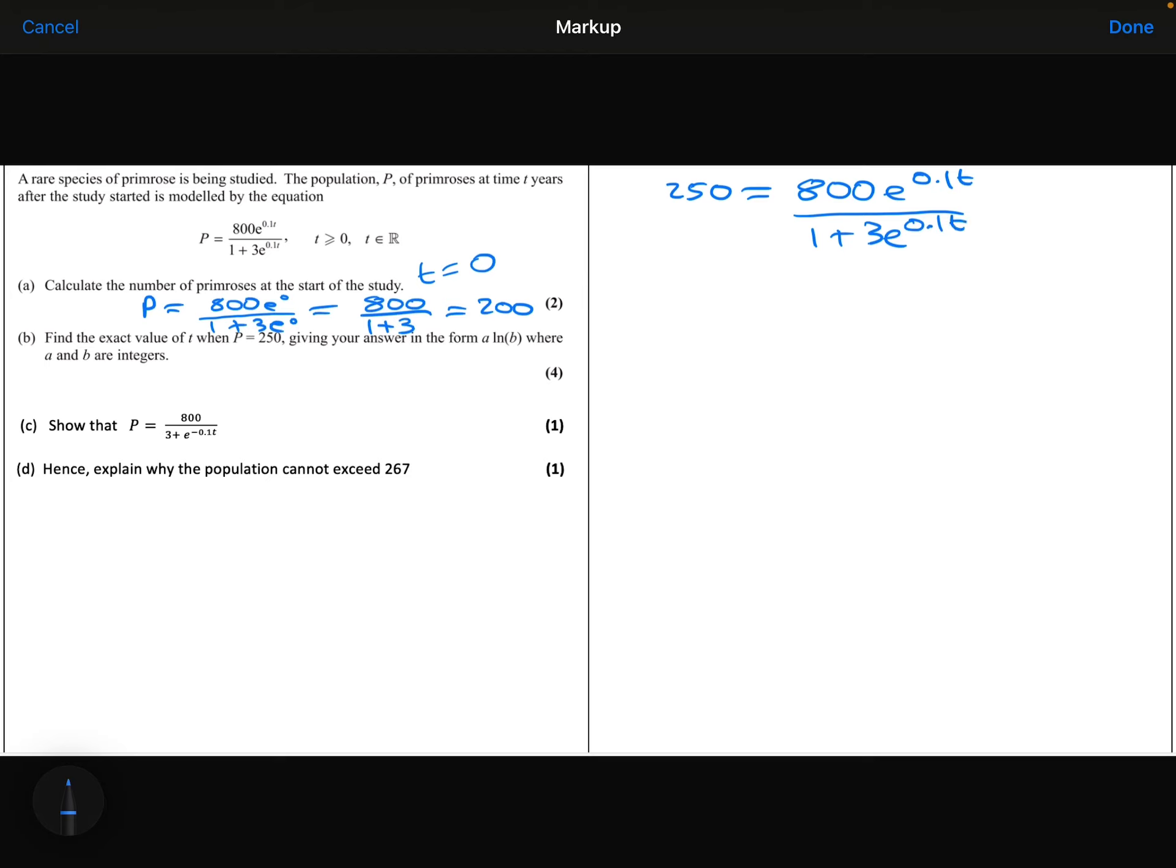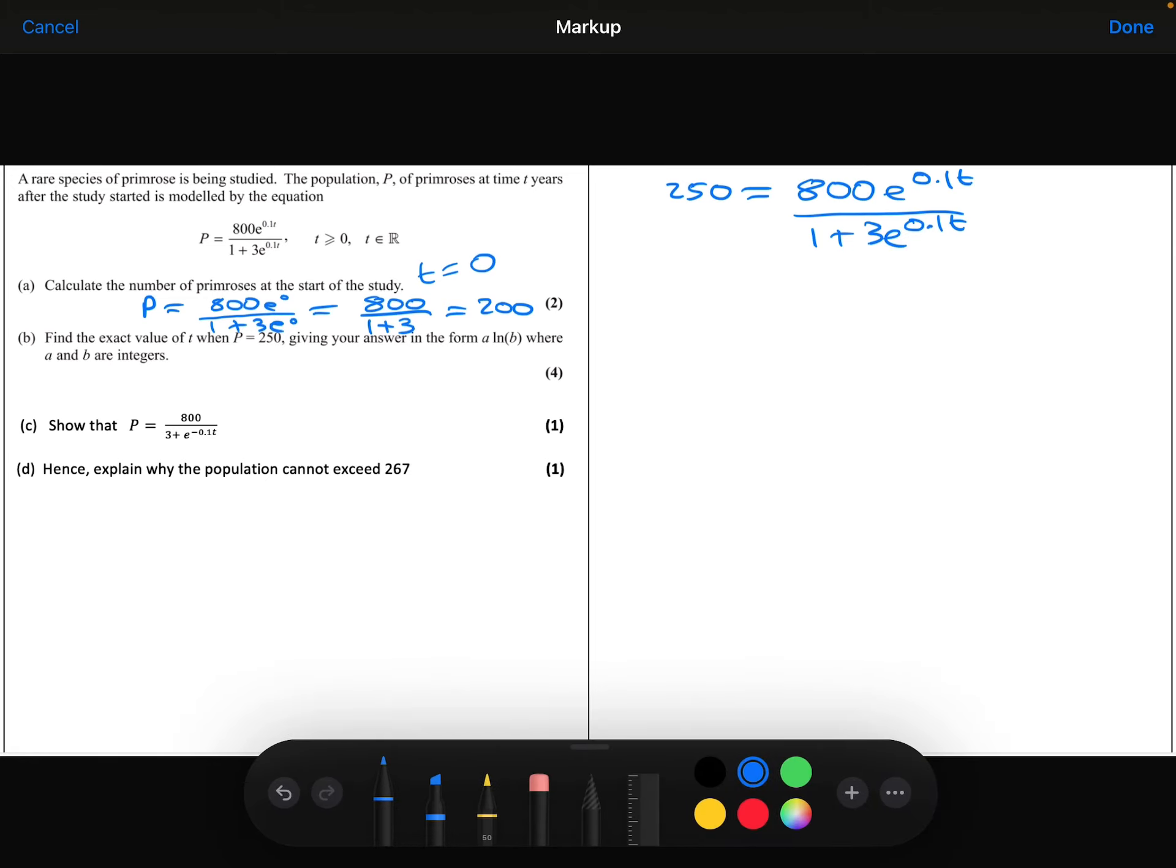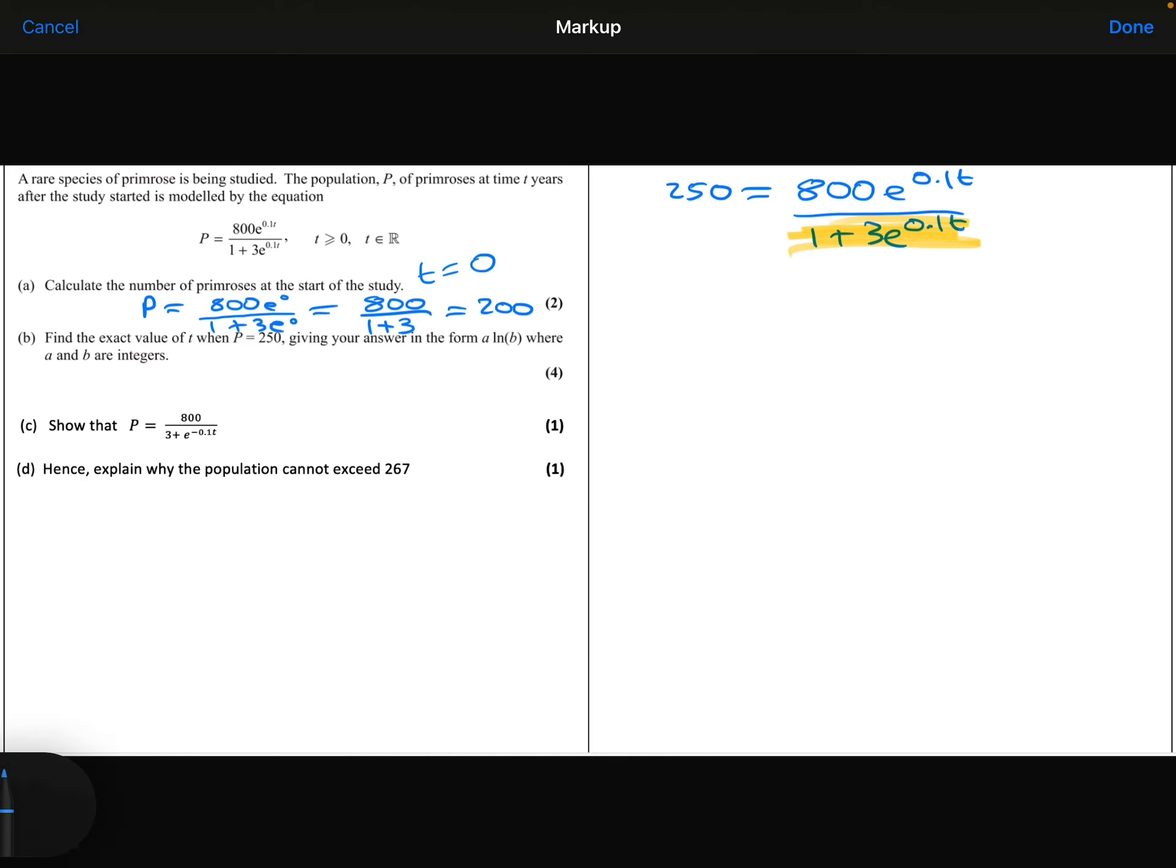So first thing I'm going to do, I'm going to multiply both sides by the 1 plus 3 e to the 0.1t, just to get rid of the fraction. Next, I'm going to expand the brackets. And then I'm going to group up the exponential terms.